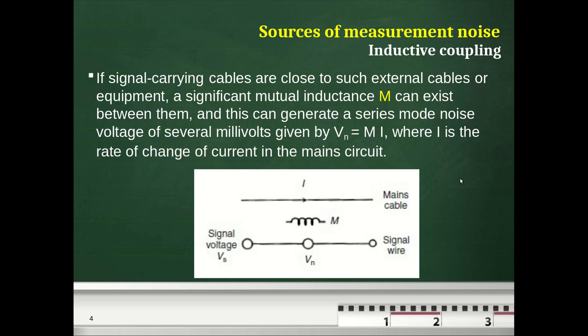Inductive coupling means that two wires placed near each other create a mutual inductance between them, so they affect each other. There is induction between a main cable and a signal wire with mutual inductance M. This gives a noise voltage VN equal to M times the rate of change of current in the main circuit, which can be several millivolts.